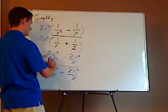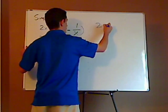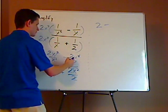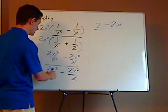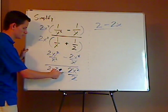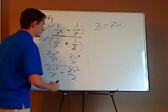So you're left with, in the numerator, you have 2 minus 2x over 2x plus x squared.